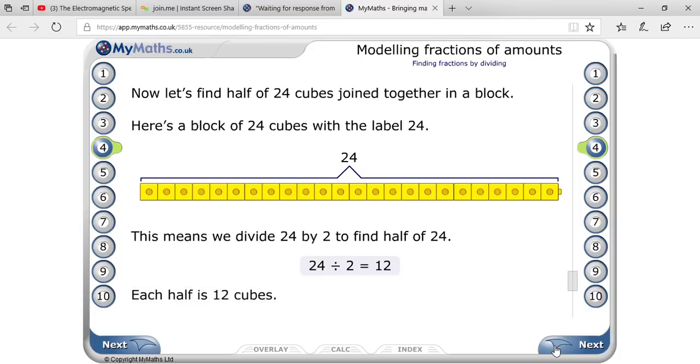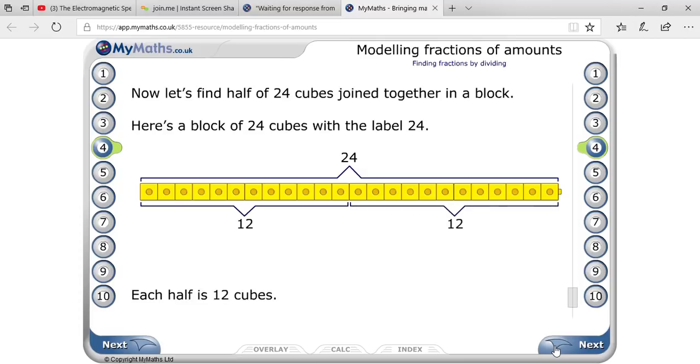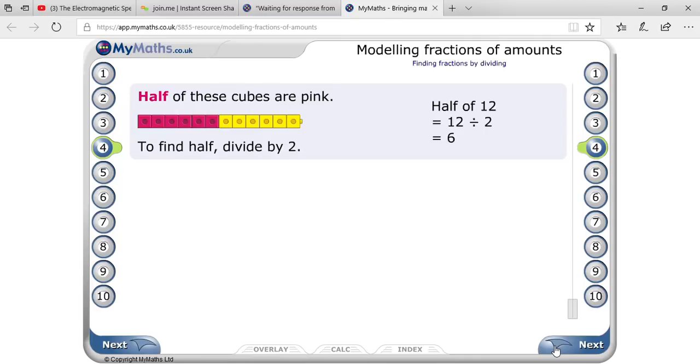So that means in each group there will be 12. There will be 12 objects, 12 and 12, and one part you have to take, that will be your answer. So half of 24 is 12. Basically what you have to understand: half means you have to divide by 2.